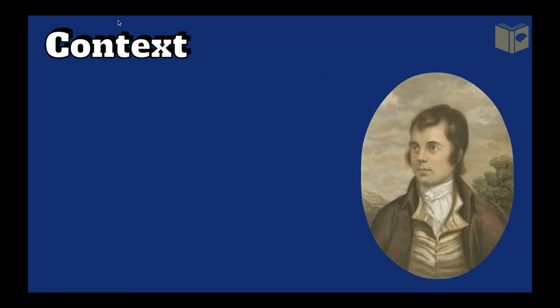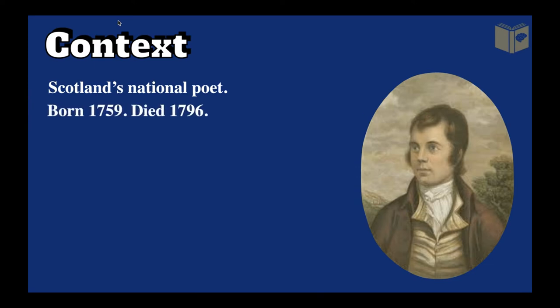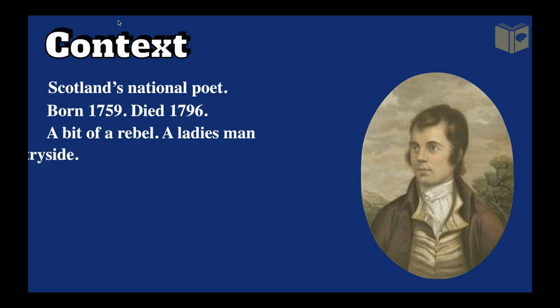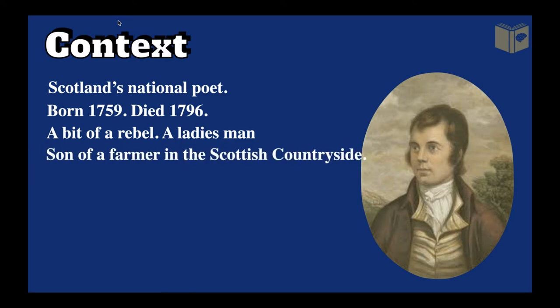Before you read the poem, we need a bit of context. The poem was written by Robert Burns — he is Scotland's national poet. He was born in 1759 and died in 1796. He's a bit of a rebel and a bit of a ladies' man — he had quite a lot of illegitimate children at the time, which was quite risqué, making him something of a bad boy.